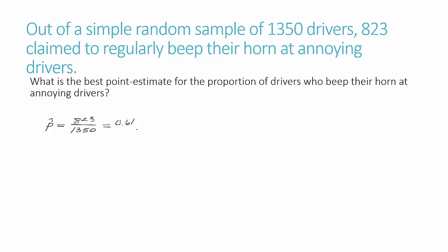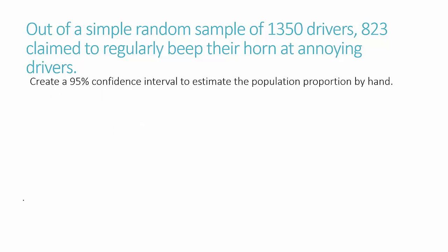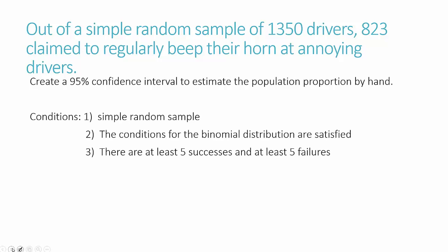Now let's look at a confidence interval. We are asked to create a 95% confidence interval to estimate the population proportion by hand. In order to do this, we first need to look at our scenario and see if it meets the conditions. The first condition is that it needs to be a simple random sample — that is mentioned in the question, so that condition is met.